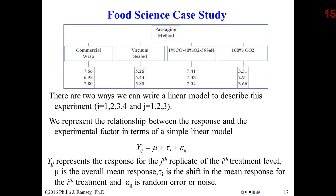Looking at the results on slide 17 — remember these are log counts, so don't be misled by the magnitude — we have three replicate measurements for each packaging method. The variation within each packaging method is considered noise or experimental error. We don't know why all three steaks don't result in exactly the same response, but that is the physical reality of the world you'll work in as a professional scientist or engineer.